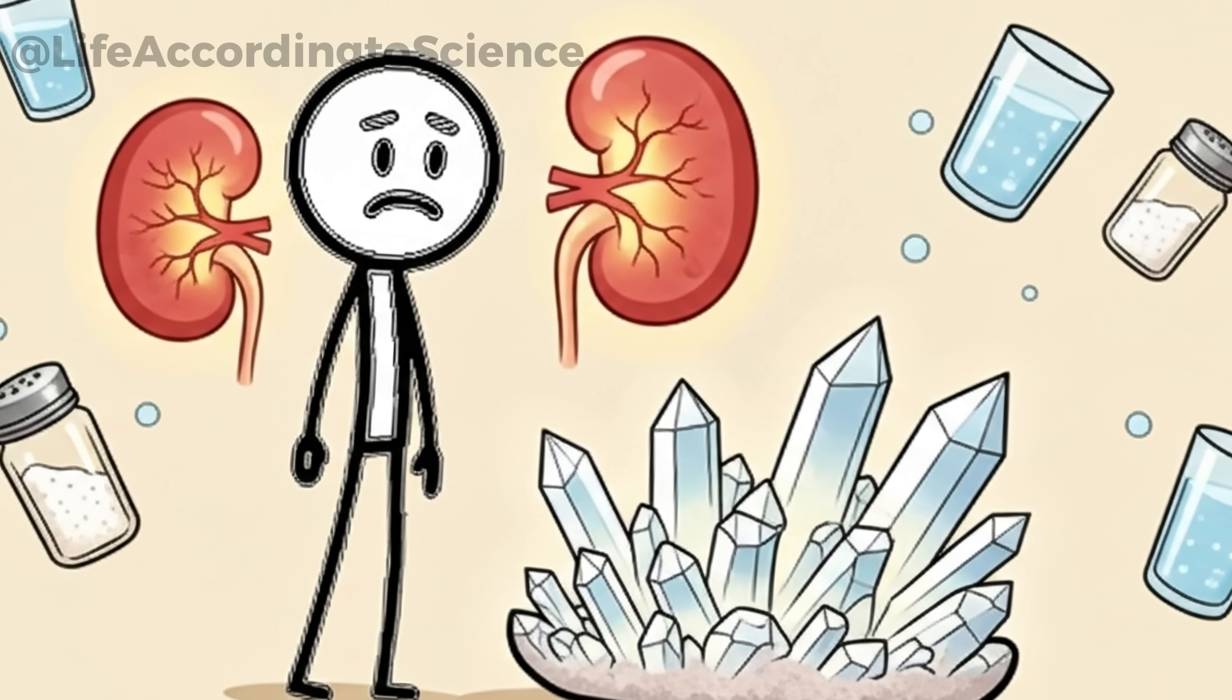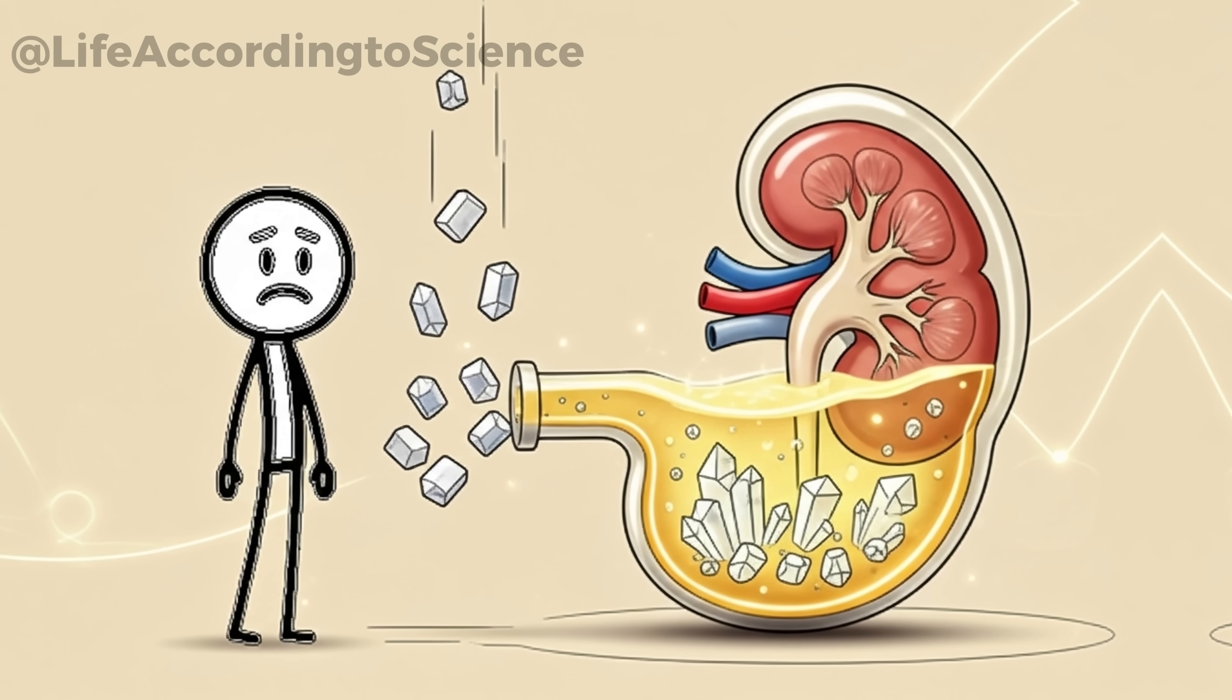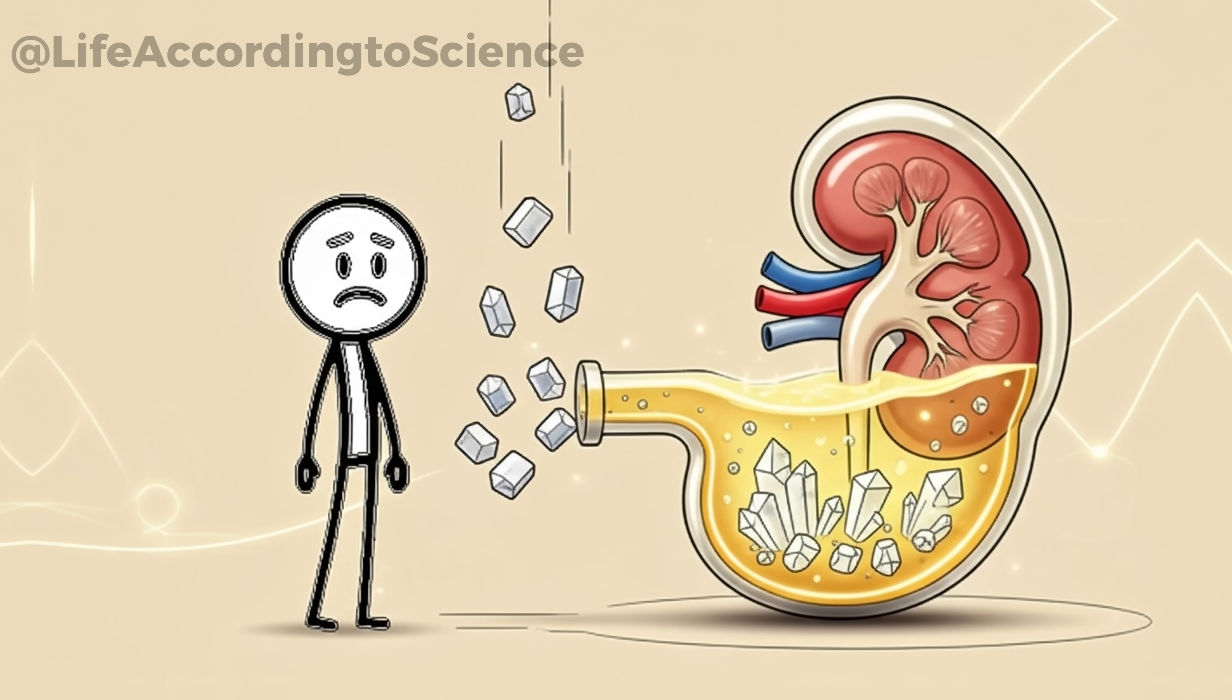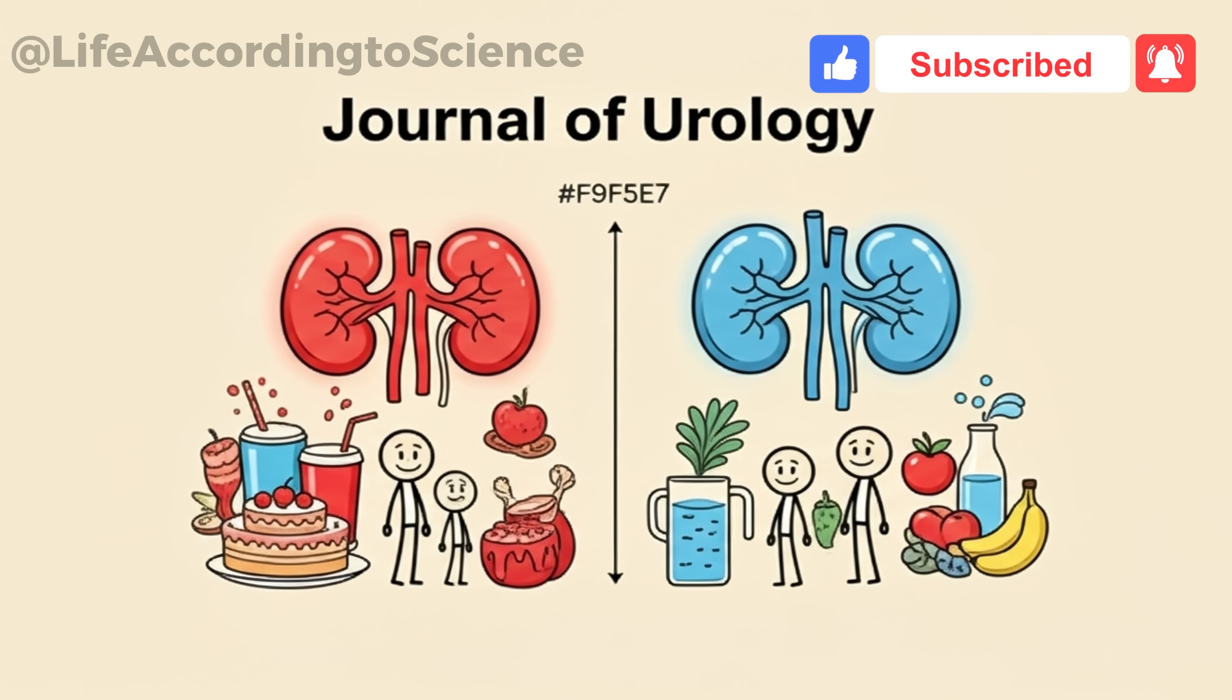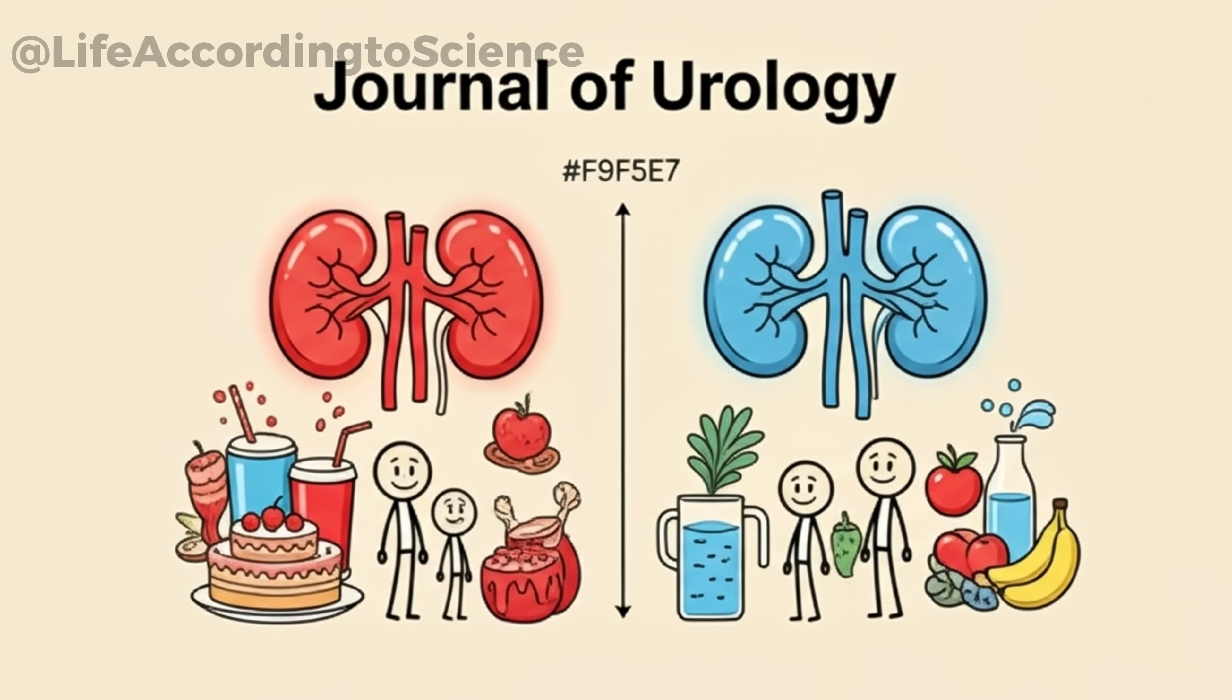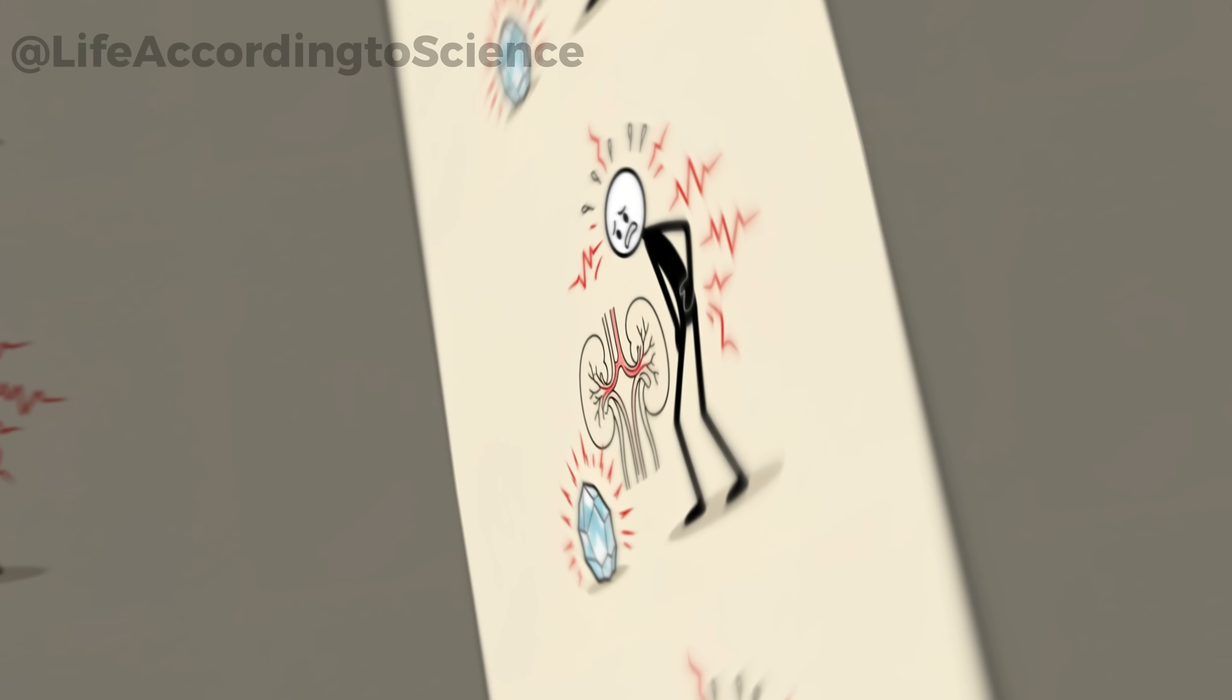Now let's talk about something painful, kidney stones. Most people blame salt or dehydration, but sugar is a sneaky culprit. High sugar intake increases calcium excretion in urine, making it easier for crystals to form. Over time, those crystals harden into kidney stones. A study in the Journal of Urology found that people with the highest sugar intake had a significantly higher risk of developing kidney stones compared to those who consumed less. It's not just about soda. It's cakes, candies, and even healthy juices packed with hidden sugars.